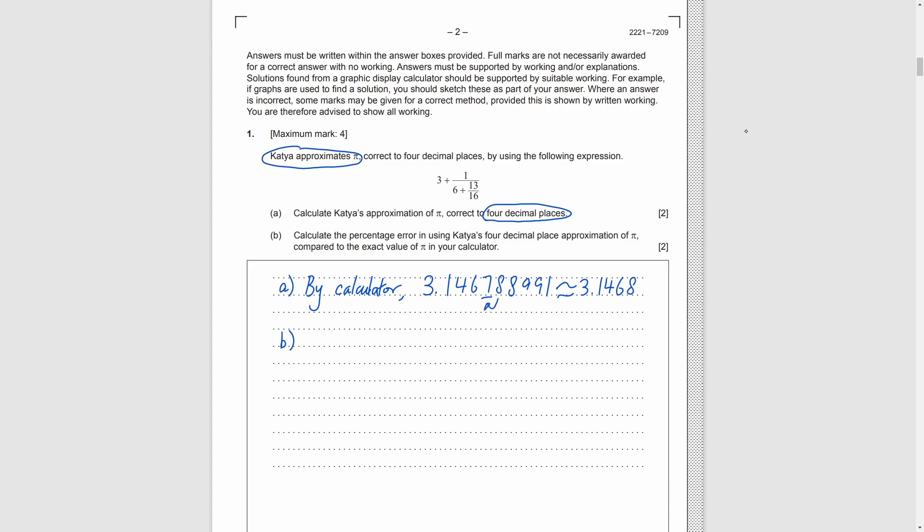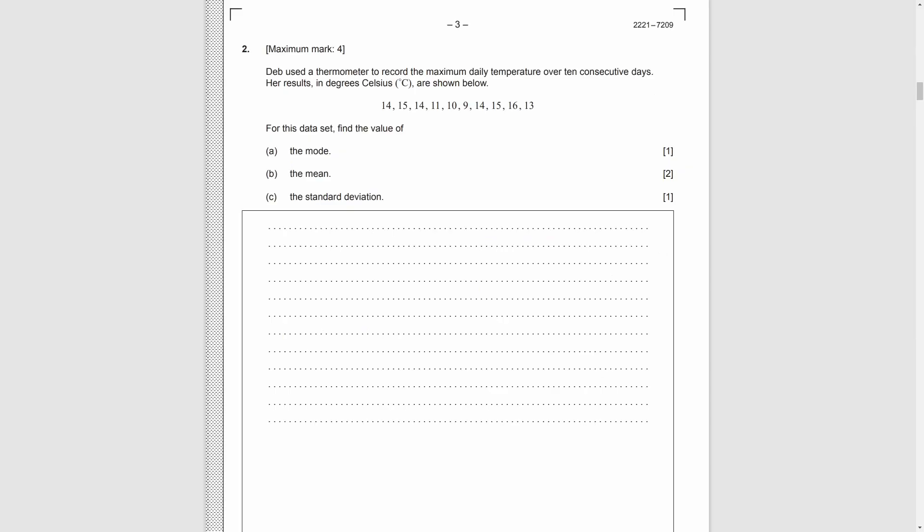Part B, to calculate the percentage error, we use the absolute difference between the real value and the approximation divided by the real value of pi. Then we multiply it by 100%. For the real value of pi, we can just take the pi value from our calculator. Finally, we get 0.1654%.